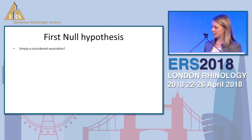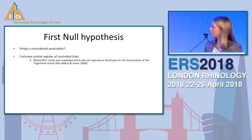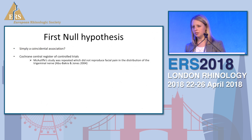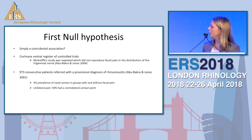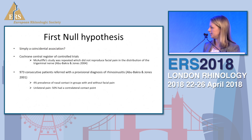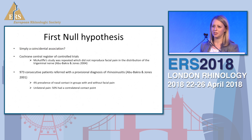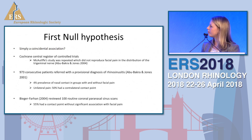For the first hypothesis — contact points not related to facial pain — is it simply a coincidental association? Abu Bakr and Jones tried to reproduce McAleaf's study from the 1940s using pressure and substance P rather than faradic current, and found they could not reproduce the symptoms of facial pain. They also looked at 973 consecutive patients referred with a provisional diagnosis of rhinosinusitis, divided into those with and without facial pain, and both groups had a prevalence of 4% of contact points. Of those with unilateral pain, 50% had a contralateral contact point. Another study of 100 paranasal sinus scans showed 55% had a contact point without significant association with facial pain.